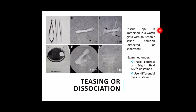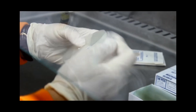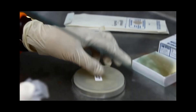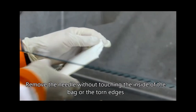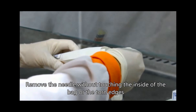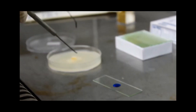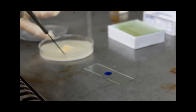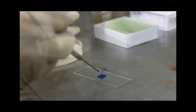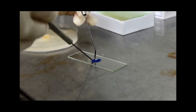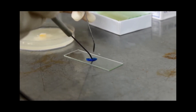One method of fresh tissue examination is through teasing or dissociation. This is a process whereby a selected tissue specimen is immersed in a watch glass containing isotonic salt solution, carefully dissected or separated, and examined under the microscope either unstained by phase contrast or bright field microscopy, or stained with differential dyes.